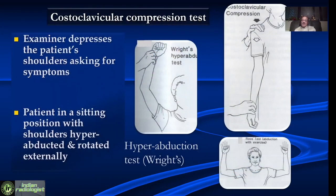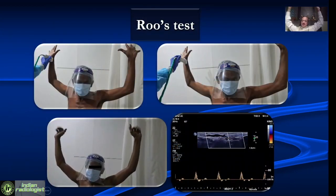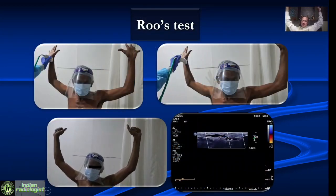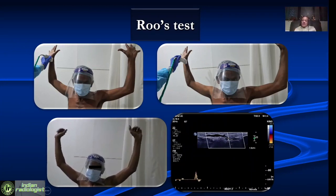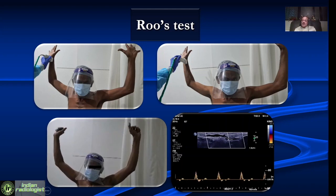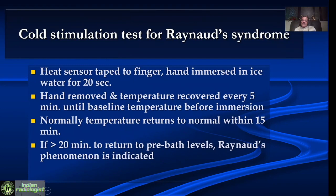Other tests include the costoclavicular compression test, Wright's hyperabduction test, and the ROOS test. In the ROOS test, we ask the patient to raise the hands, hyperextend and hyperabduct, then move the fingers. You can look at the radial artery but this becomes very cumbersome, so commonly we look at the subclavian artery or the axillary artery during this maneuver.